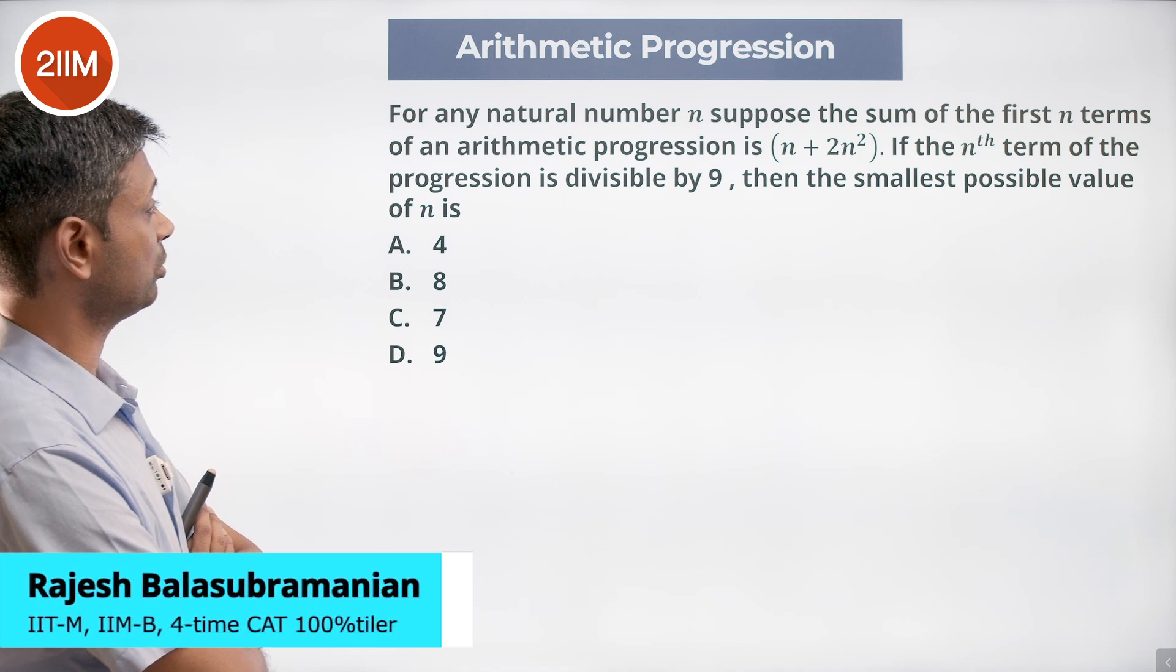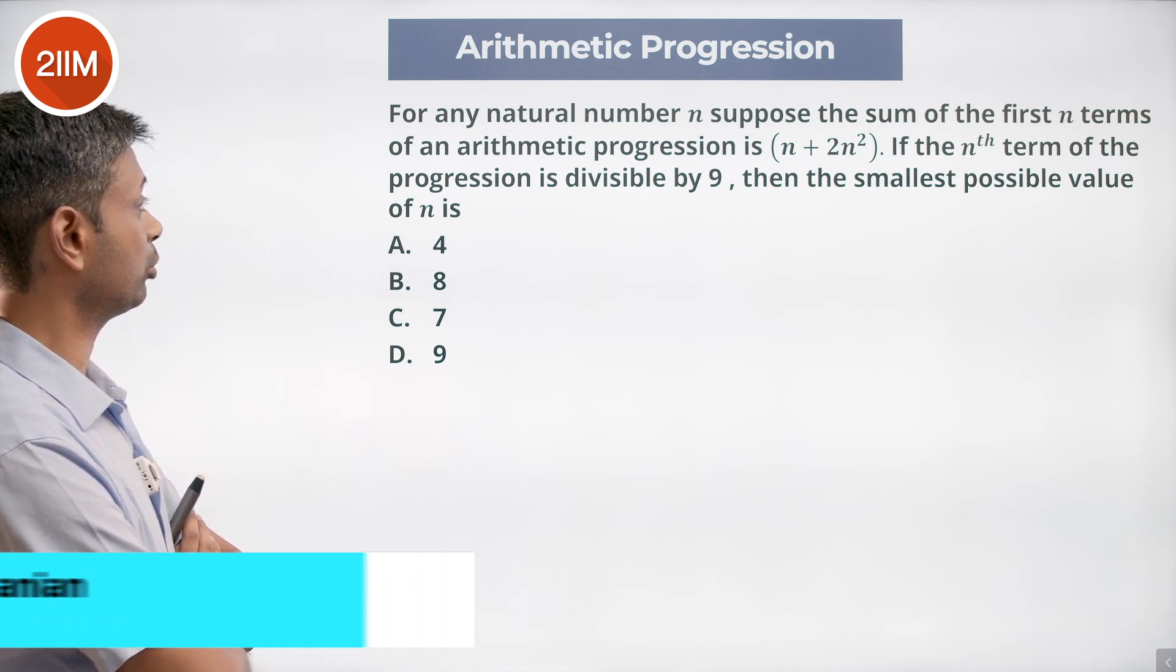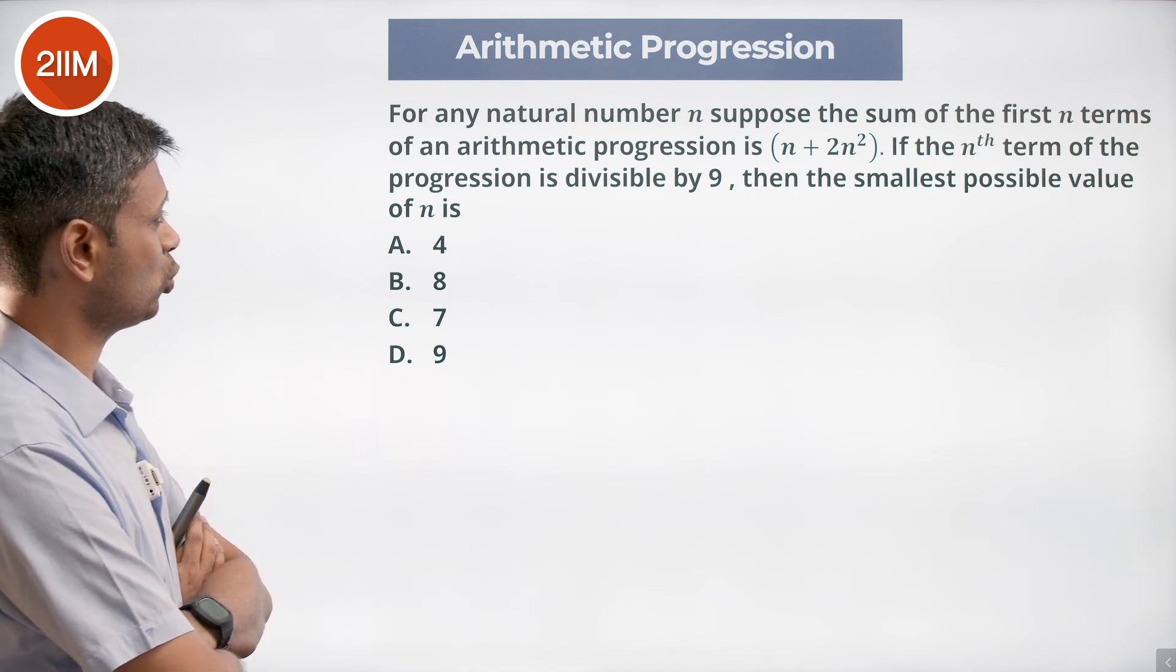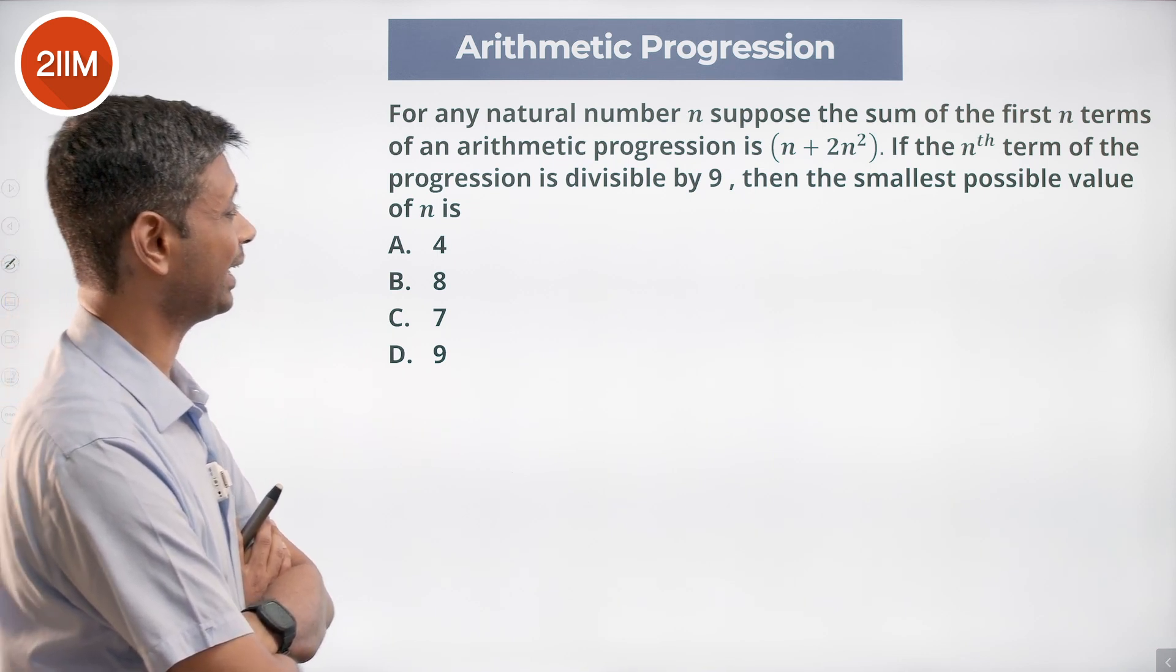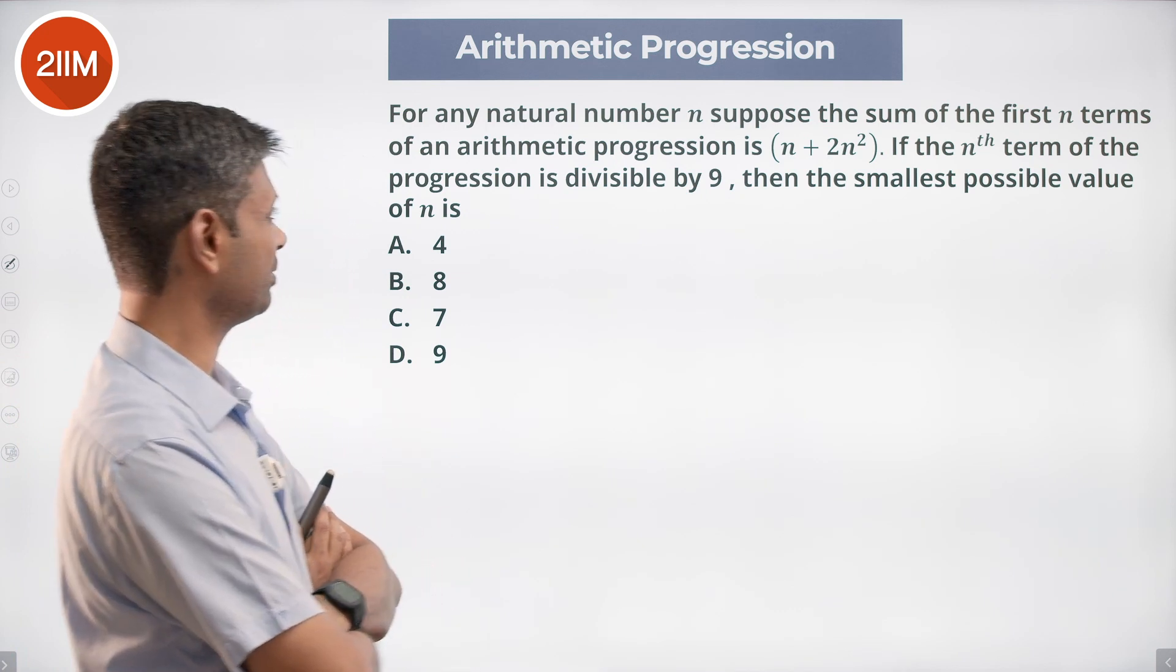For any natural number n, suppose the sum of the first n terms of an arithmetic progression is n + 2n². If the nth term of the progression is divisible by 9, then the smallest possible value of n is: